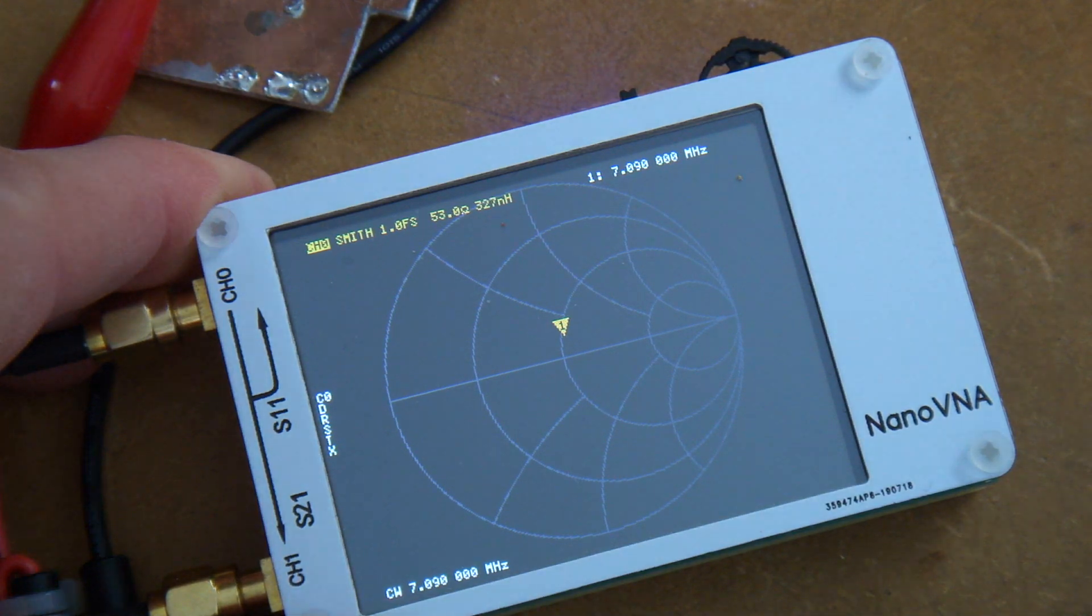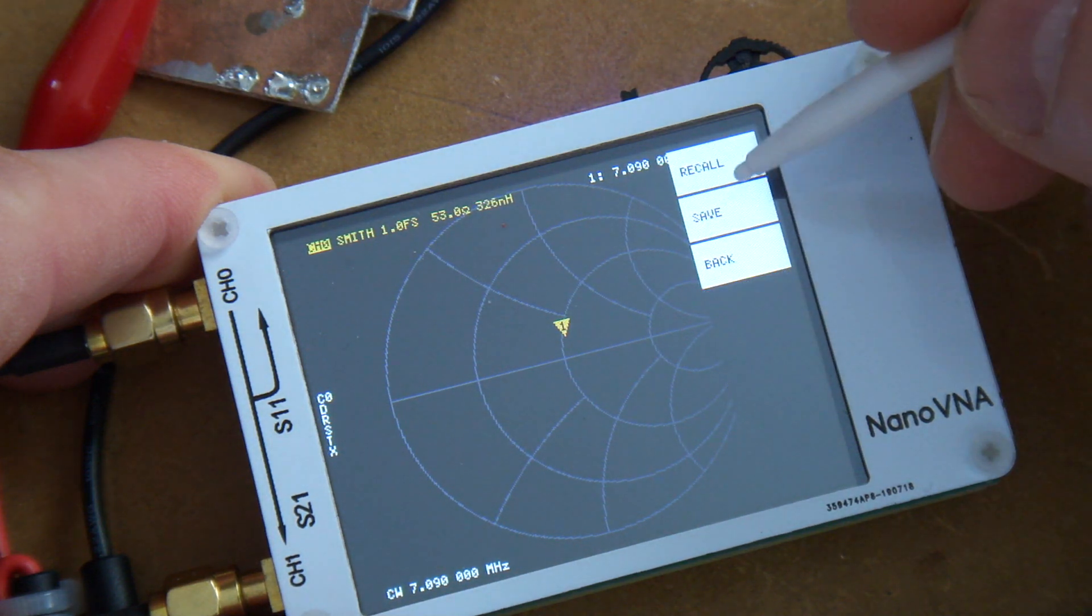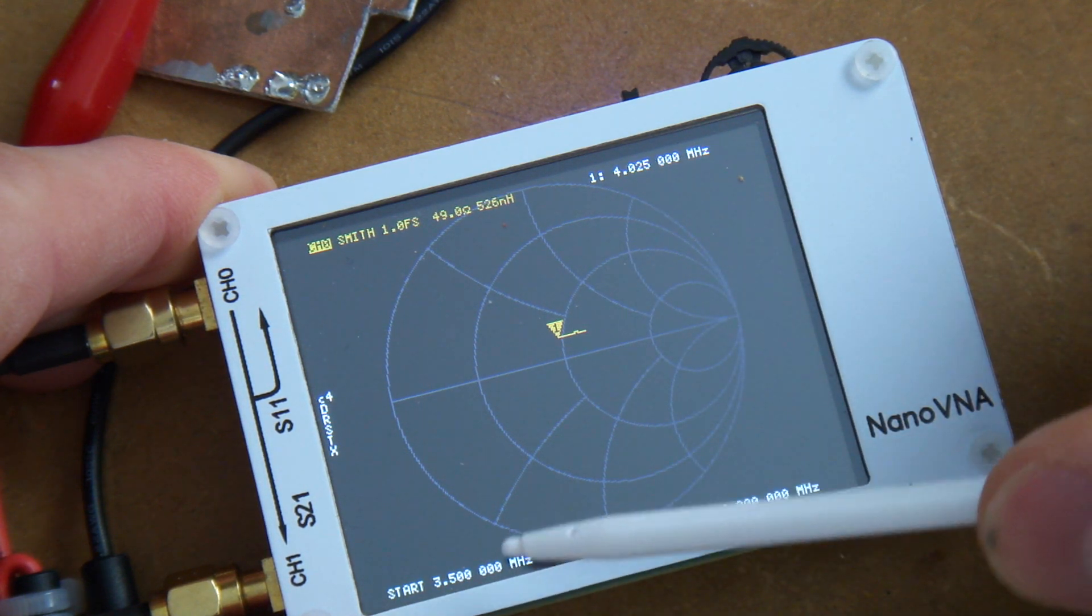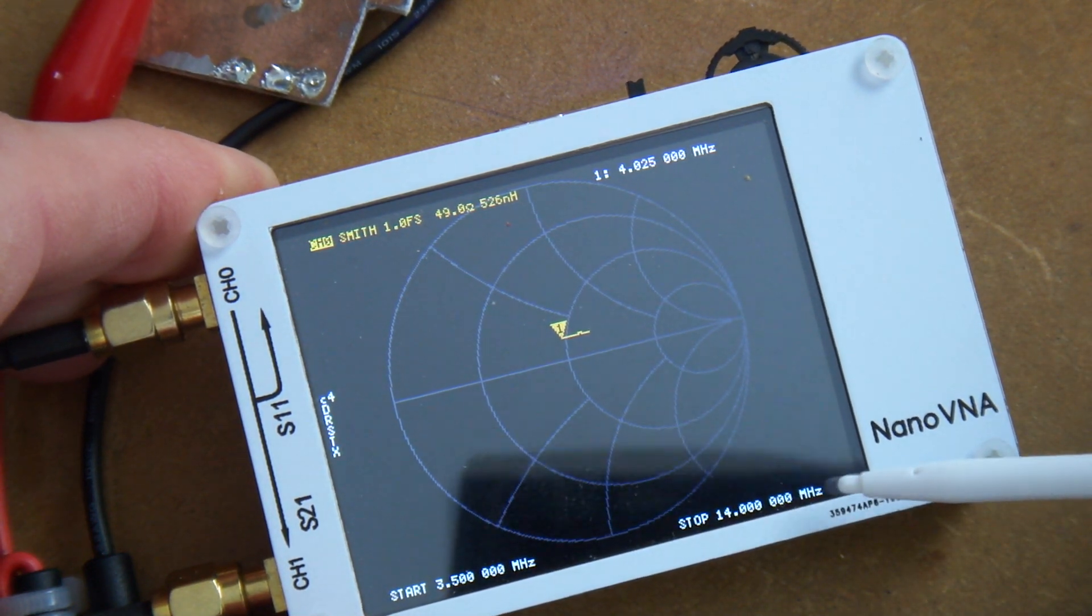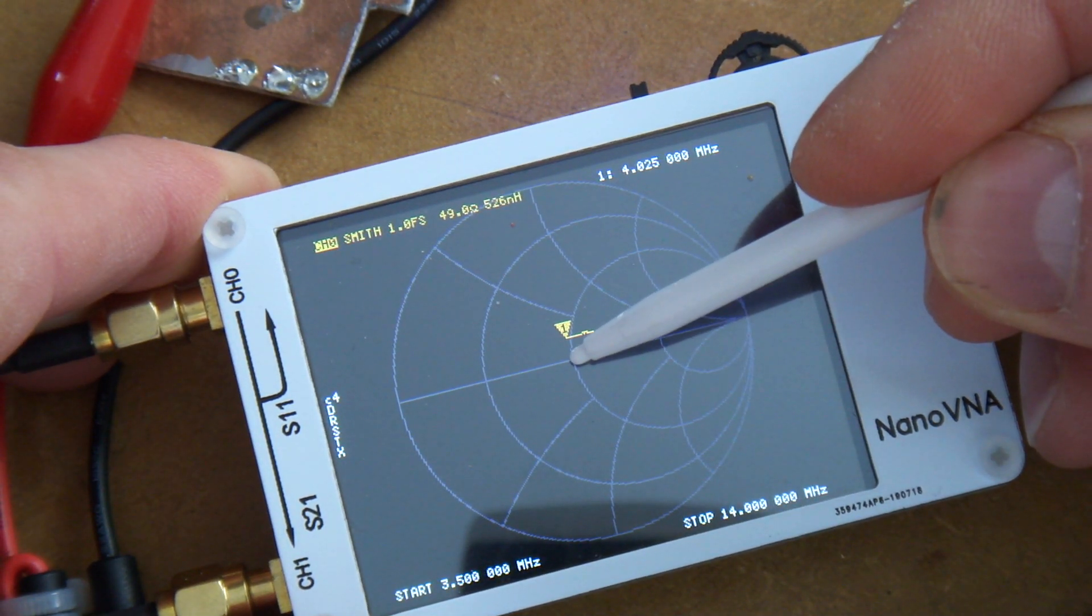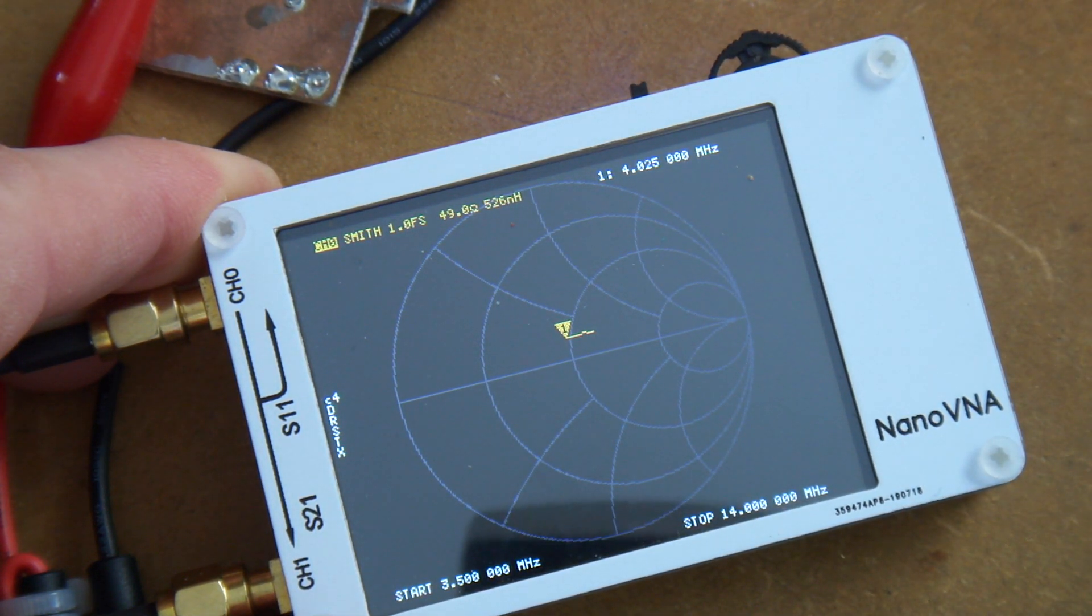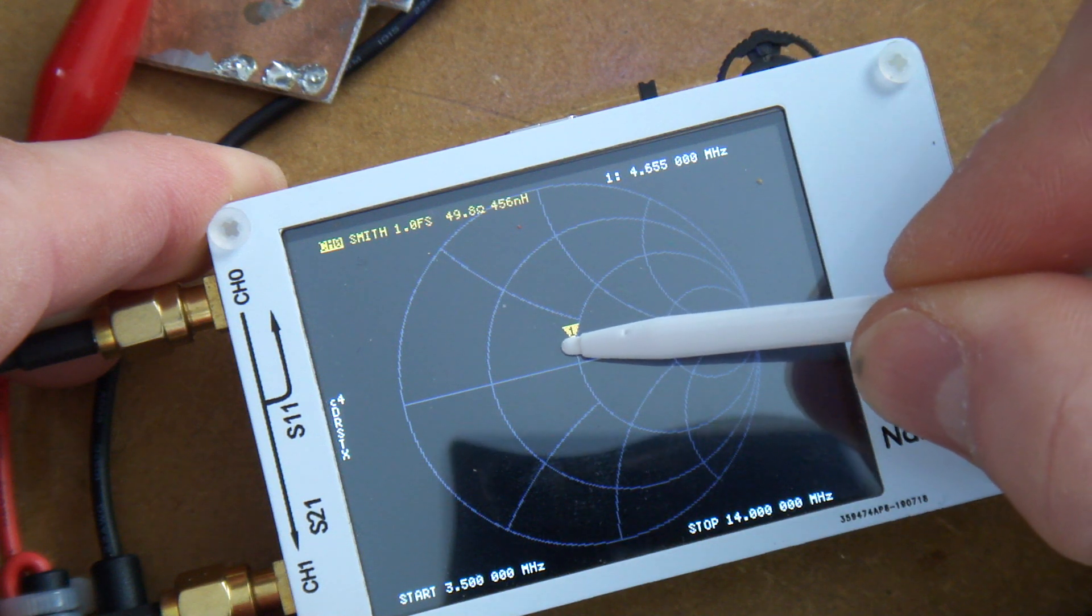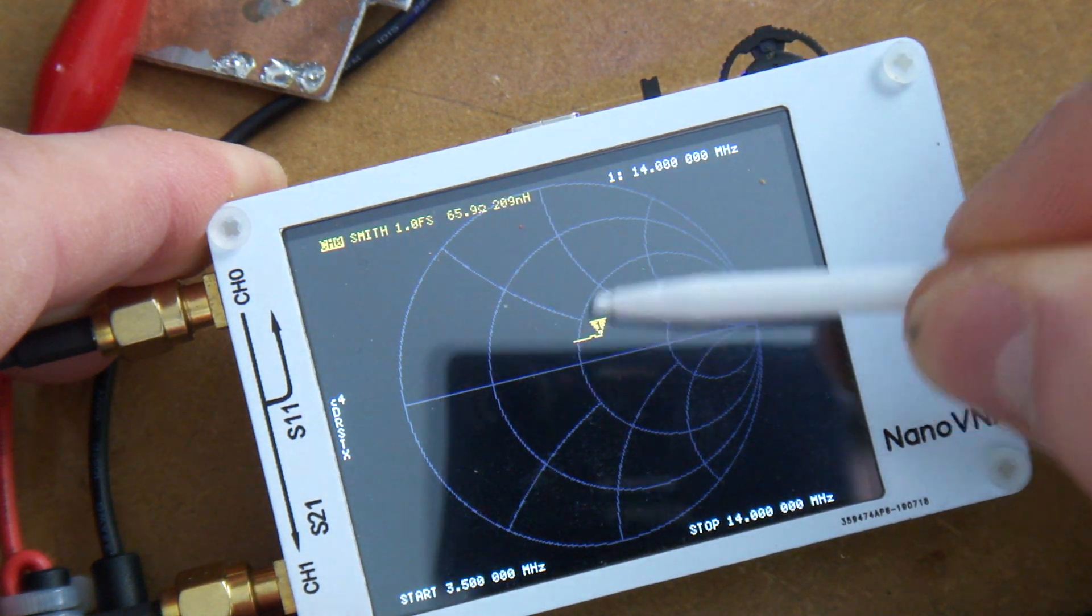I'm going to bring up a memory recall. My start frequency is 3.5 MHz for the 80m band, up to 14 MHz. You can see there that it's not exactly on 50 ohms, which would be in the middle there, but it's not too bad. It turns out to be a range of 48 to 66 ohms. I can drag along the frequency range, and I'm varying from roughly 49 ohms through to 65.